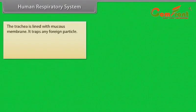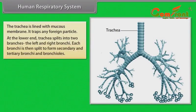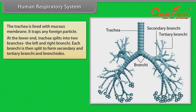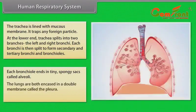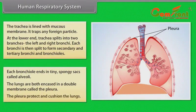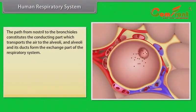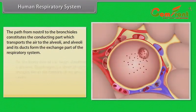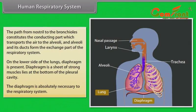During swallowing, the trachea is lined with mucous membrane, which traps any foreign particles. At the lower end, the trachea splits into two branches: the left and right bronchi. Each bronchus is then split to form secondary and tertiary bronchi and bronchioles. Each bronchiole ends in tiny spongy sacs called alveoli. The lungs are both encased in a double membrane called the pleura, which protects and cushions the lungs. The path from nostril to the bronchioles constitutes the conducting part, and the alveoli and their ducts form the exchange part of the respiratory system. On the lower side of the lungs, the diaphragm is present — a sheet of strong muscles at the bottom of the pleural cavity, which is absolutely necessary to the respiratory system.